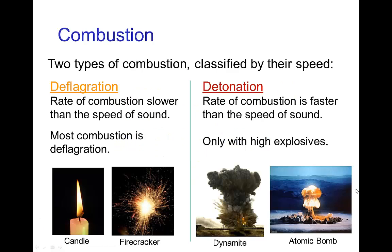Combustion and explosions. There are two types of combustion classified by how fast the combustion occurs. The first is called deflagration, and that is the slower type of combustion — by far the most common. Something as slow as a burning candle, or even something like a firecracker, so low explosives are considered deflagration. When the combustion occurs much faster — in fact when the rate is such that the combustion is occurring close to the speed of sound — then we call that a detonation. Detonation is much less common; it's basically only with high explosives or extreme situations like atomic weapons.